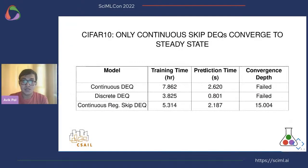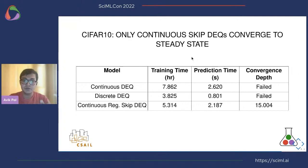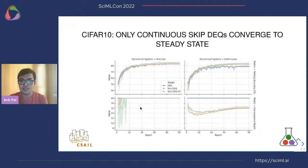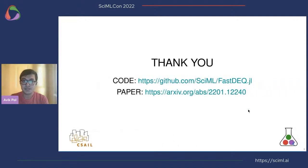Coming to continuous models on CIFAR-10, we found that vanilla continuous and discrete DEQs do not converge to a steady state — though this doesn't necessarily affect training. However, with continuous skip DEQs the models are actually able to converge within a reasonable depth. We set a threshold of a maximum of 25 layers for convergence, and only the continuous regularized models could converge within that. Most models have similar accuracy, but the continuous skip models converge faster to the steady state, meaning faster training and prediction. Thank you, that's all.